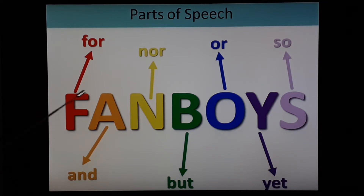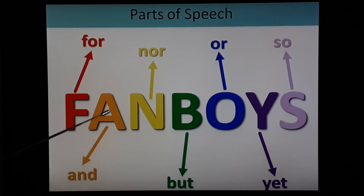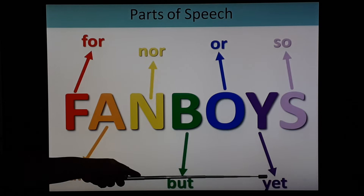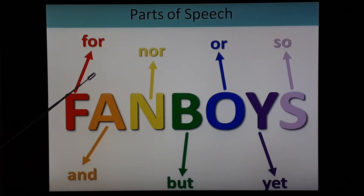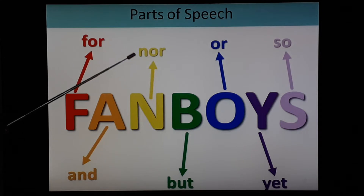FANBOYS: F stands for 'for', A for 'and', N for 'nor', B for 'but', O for 'or', Y for 'yet', and S for 'so'. You have to remember all these FANBOYS. Today we will see 'for' and 'nor'.